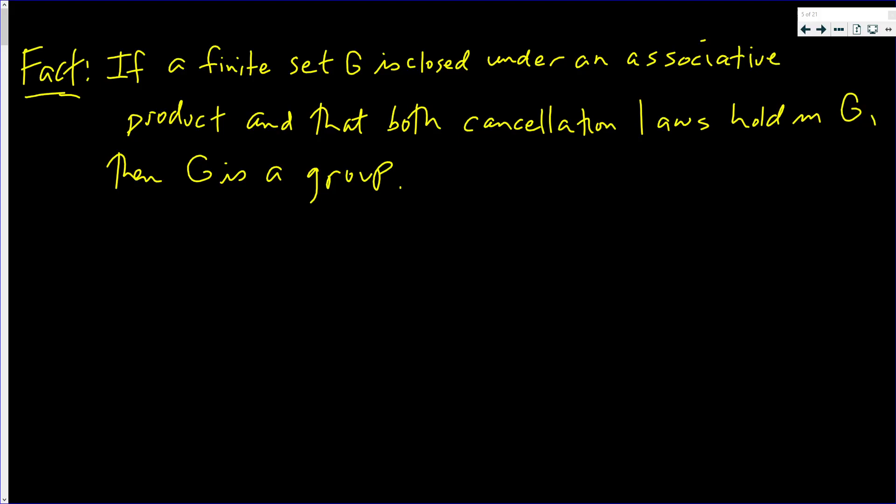This video will prove a very interesting fact. If you have a finite set that is closed under an associative property and that both cancellation laws hold in G, then G is a group.